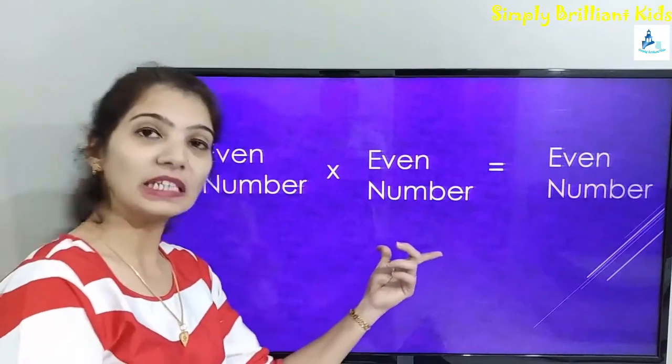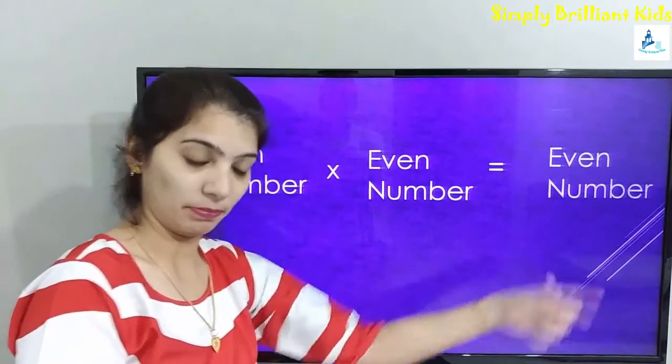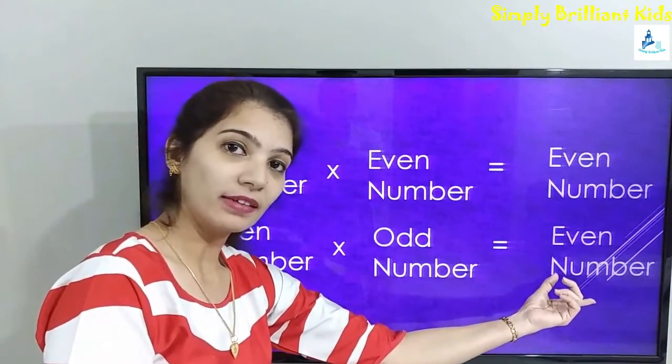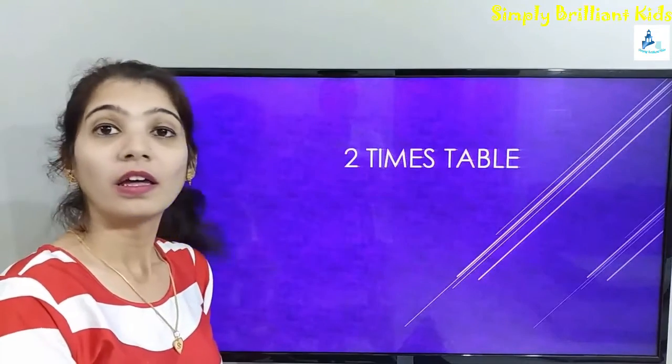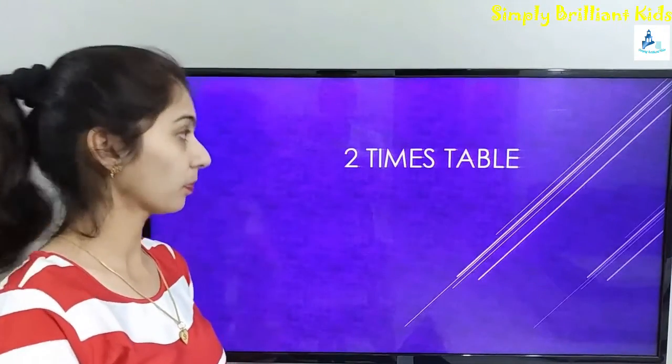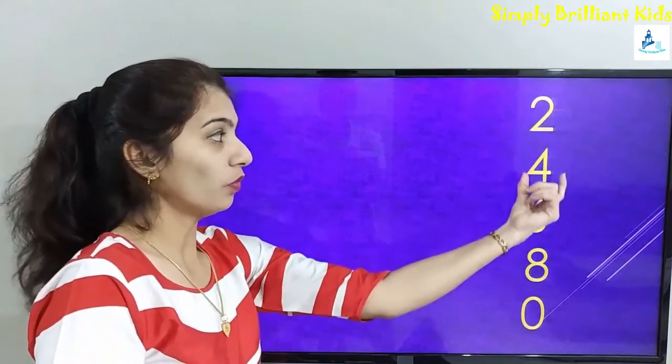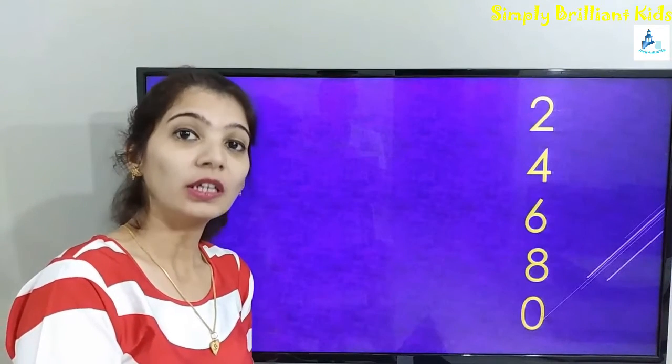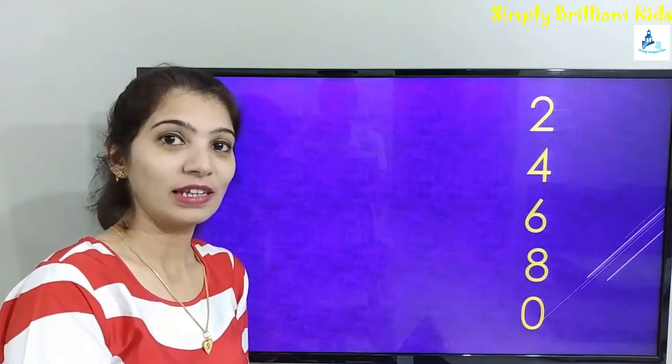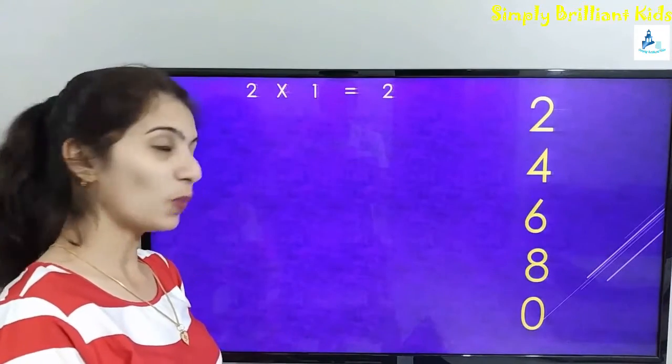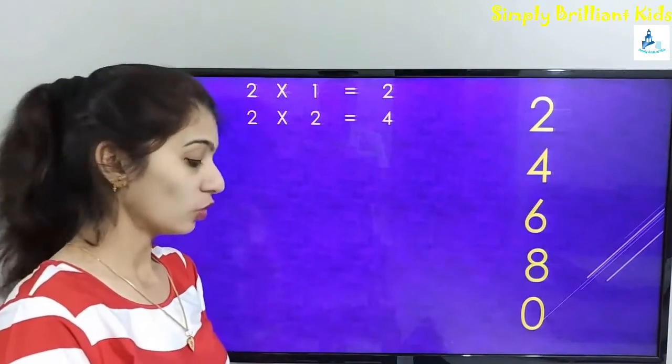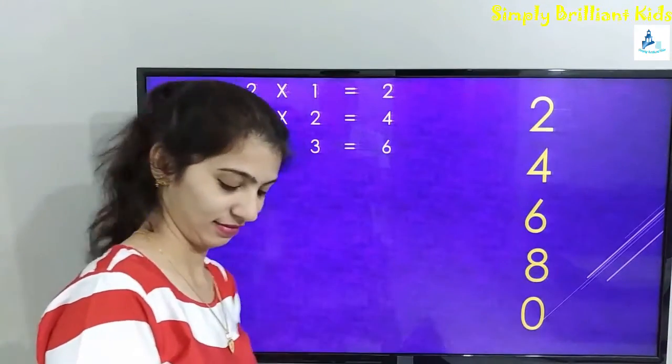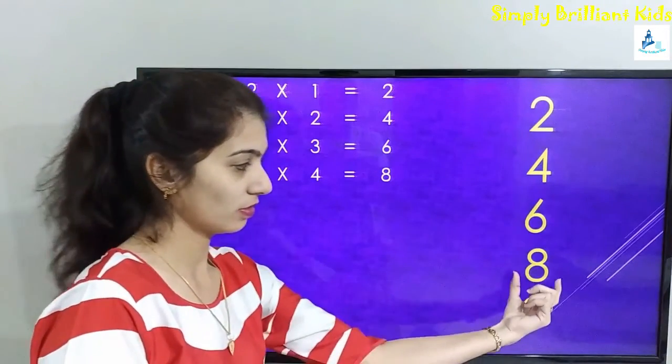Even number multiplied by even number, the answer will still be an even number. Even number multiplied by an odd number, the answer will be an even number. Now let's learn two times table. Just observe the series: 2, 4, 6, 8, 0. You need to learn the series which will help you to learn the two times table very easily. Let's see how. Two ones are two, two twos are four, two threes are six, two fours are eight, two fives are ten.